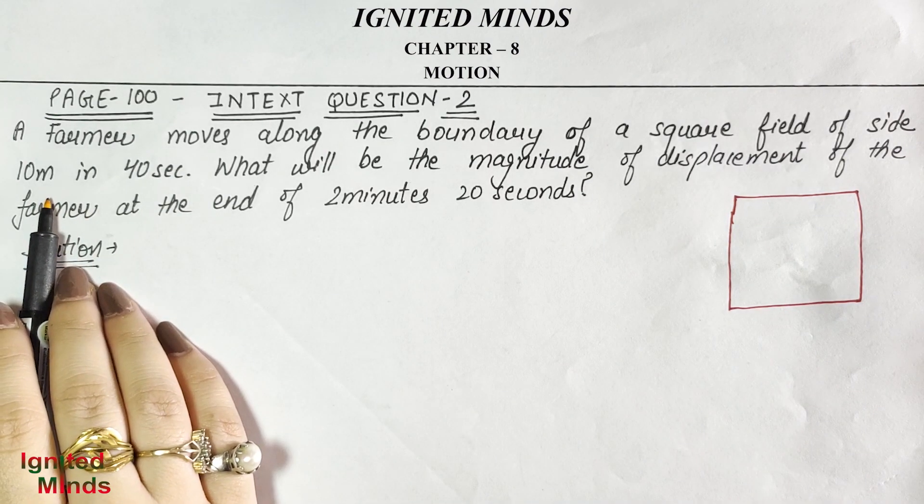Now we will do the second question on page number 102, in-text question 5. During an experiment, a signal from a spaceship reached the ground station in 5 minutes. First underline what is given: time = 5 minutes. A signal travels from a spaceship to the ground in 5 minutes. We need to find the distance of the spaceship from the ground station.